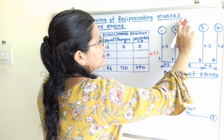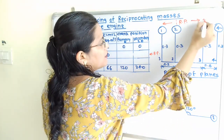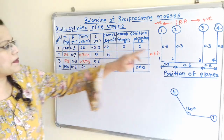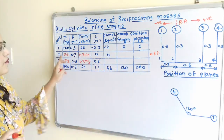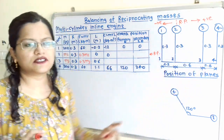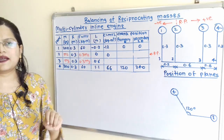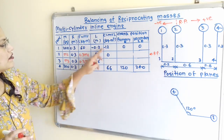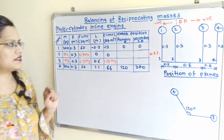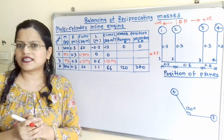Distances to the right of the reference plane carry a positive sign and distances to the left carry a negative sign. The couple column is force multiplied by distance L: for plane 1 it is −12, for plane 2 it is 0, for plane 3 it is 0.18·M3, and for plane 4 it is 66. For the primary crank positions: plane 1 is at 0°, plane 4 is at 120°, while theta 2 and theta 3 are unknown. The secondary crank position is obtained by multiplying the primary position by 2: plane 1 gives 0°, plane 4 gives 240°.